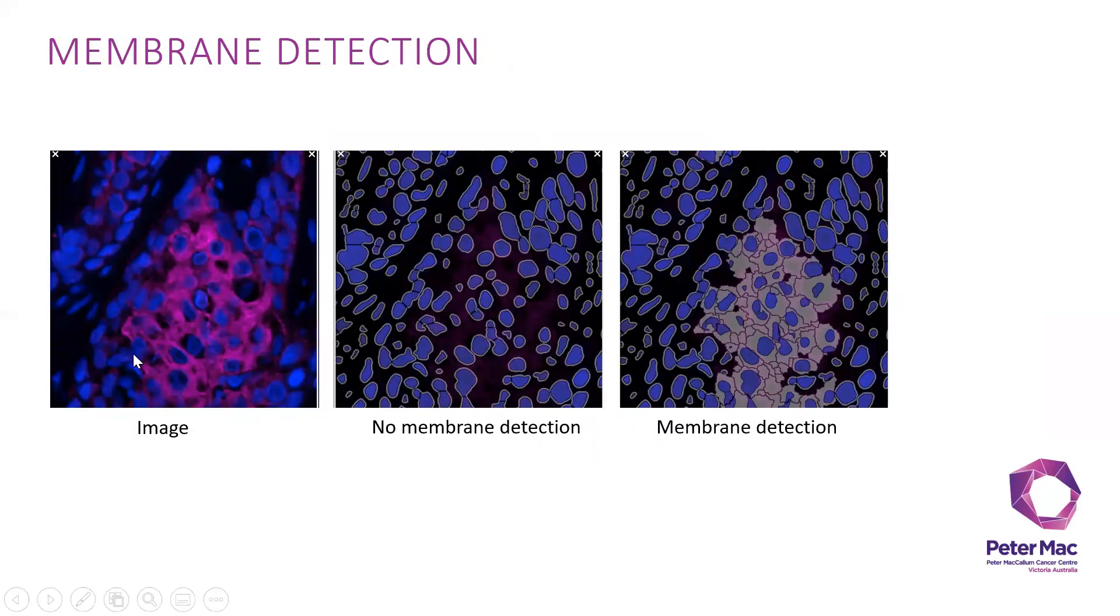For example, membrane detection: you can see the raw image here on the left is A1A3 staining. If you don't use membrane detection, it will just be the nuclei and the halo around it for the cytoplasm. The membrane detection helps you to annotate and segment the whole membrane around the cells. This will help to have more accurate cell segmentation.